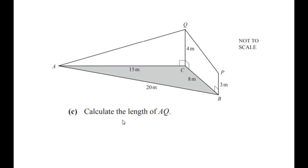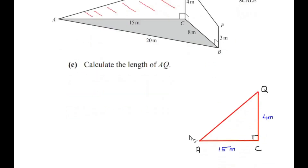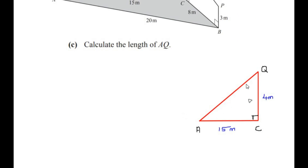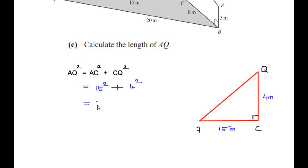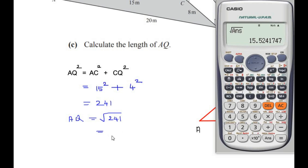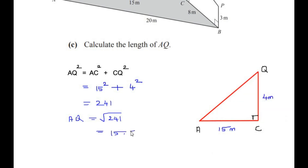Part C: calculate the length of AQ. AQ is the wire shown on the diagram. Considering the right-angle triangle ACQ, we use Pythagoras' theorem: AQ² = AC² + CQ². Substituting: 15² + 4² = 225 + 16 = 241. Taking the square root, AQ = 15.52 meters.